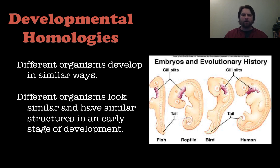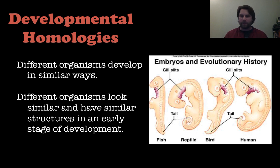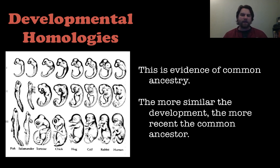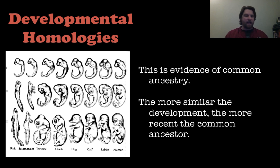Finally, developmental homologies: different organisms develop in similar ways, and the more similar their development, the closer they are to a common ancestor. Different organisms look similar and have similar structures very early in development. Looking at fish, reptile, bird, and human embryos, they all show gill slits and tails even though birds and humans don't have gills. The more similar the development, the more recent the common ancestor — for example, a chick and tortoise embryo look much more similar to each other than a fish and a human embryo.